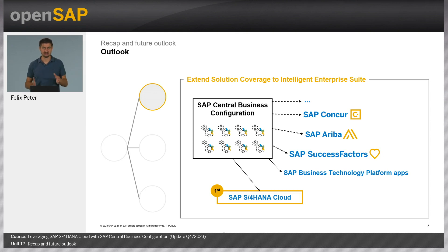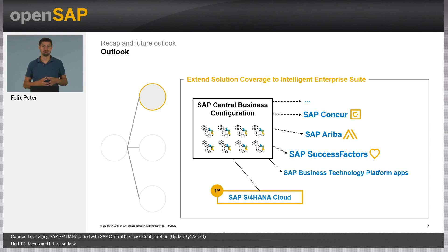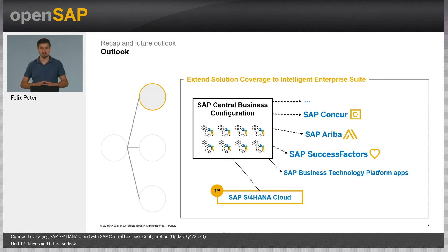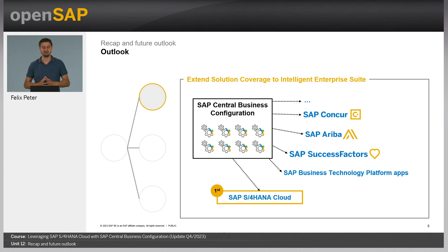Looking into the solution coverage, our goal is for SAP Central Business Configuration to really be the central configuration environment across all of SAP's solutions. That includes the Business Technology Platform, SuccessFactors, Ariba, Concur, and others. We are currently in the process of onboarding a first BTP app, which will be jointly scoped together with the S/4HANA Cloud offerings out of CBC, giving you a central entry point for scoping and configuration across these two products. Our goal going forward is to extend that to SAP's other offerings.